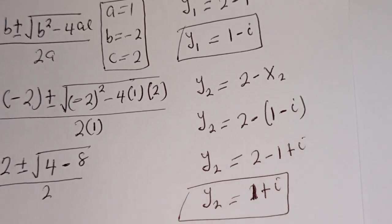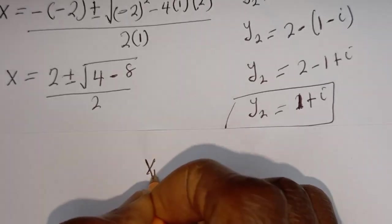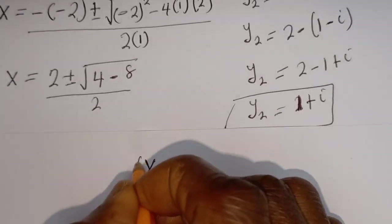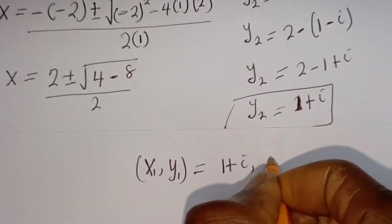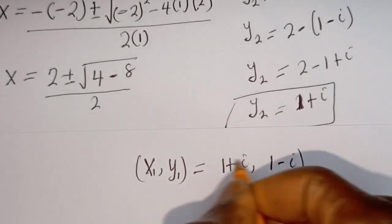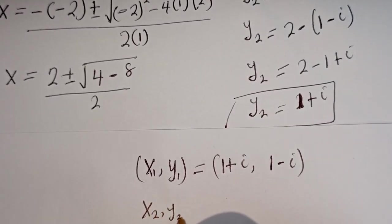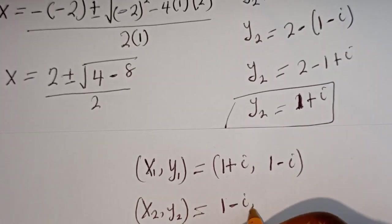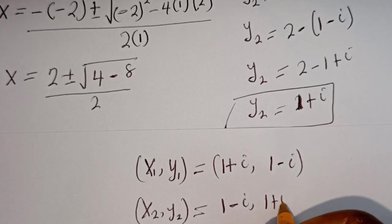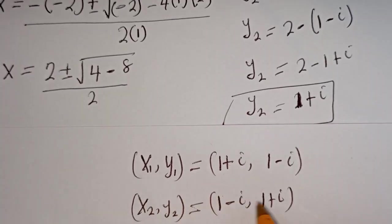Therefore our final answers are: (S1, Y1) is equal to (1 plus i, 1 minus i), and (S2, Y2) is equal to (1 minus i, 1 plus i). You can see that S1 equals Y2 and Y1 equals S2.